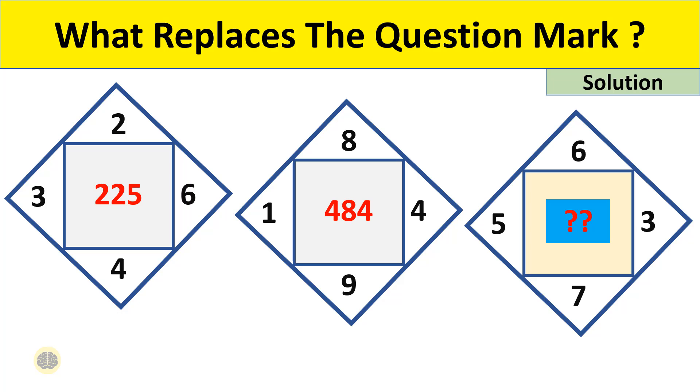In box 1, consider numbers outside the inner square and add all the numbers: 3+2+6+4 = 15. Now square the number: 15² = 225. This is the number inside the square.